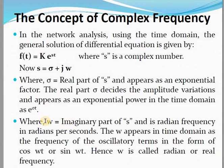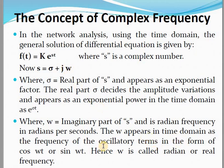Now, the second component is ω. ω is the imaginary part of s, since jω is associated with the imaginary part, and it is the radian frequency in radians per second. ω appears in the time domain as the frequency of the oscillatory term in the form of cos(ωt) or sin(ωt). Since e^(jωt) can be represented by cos(ωt) + j·sin(ωt), hence ω is called the radian or real frequency.